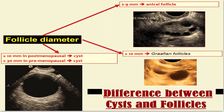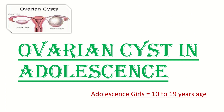Here you can see the difference between a cyst and follicles. In postmenopausal women, any structure of 10 mm or more is referred to as a cyst. In premenopausal women, 30 mm or more is classified as a cyst. If the size of a simple mass is 2 to 9 mm, it is more likely an antral follicle, and if it is more than 10 mm, it is a Graafian follicle.